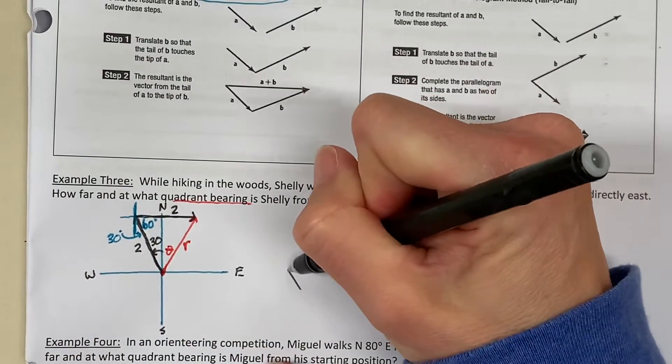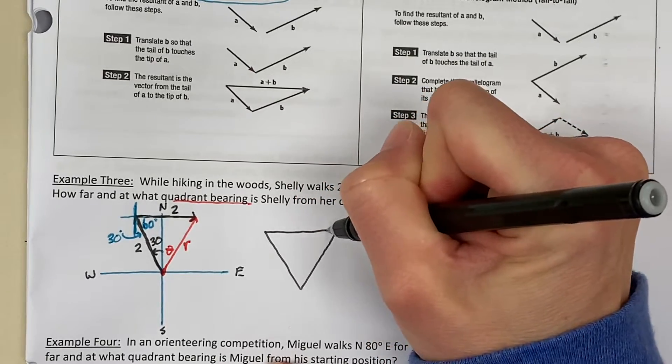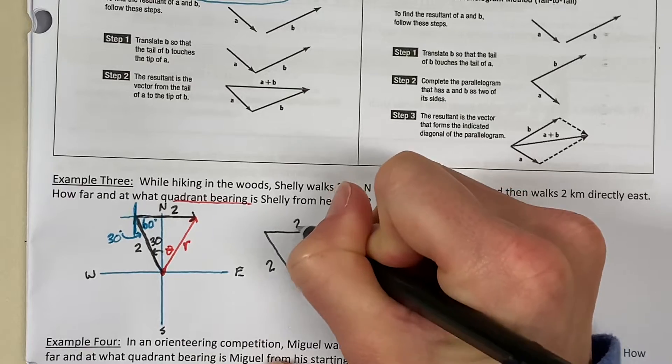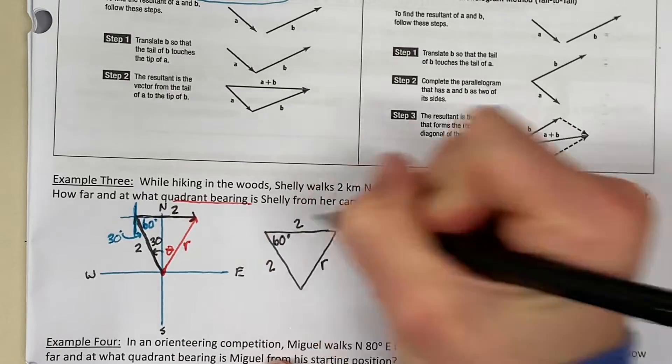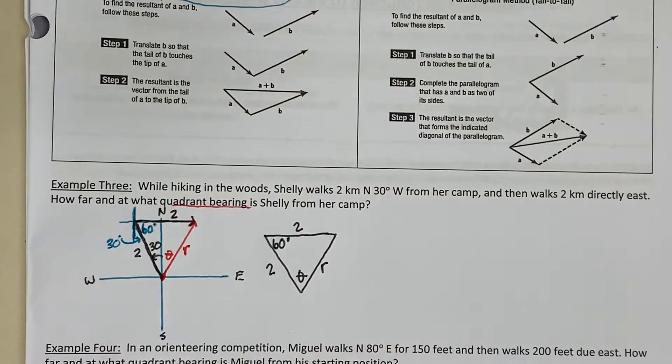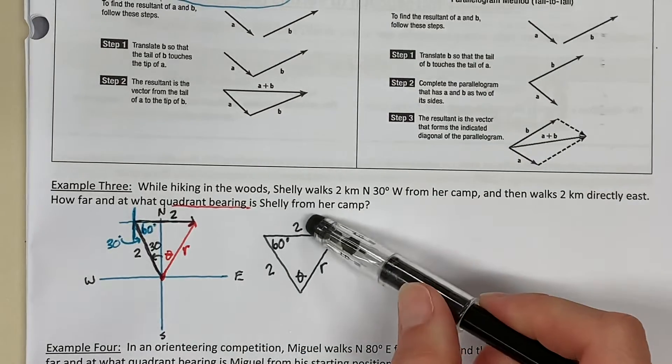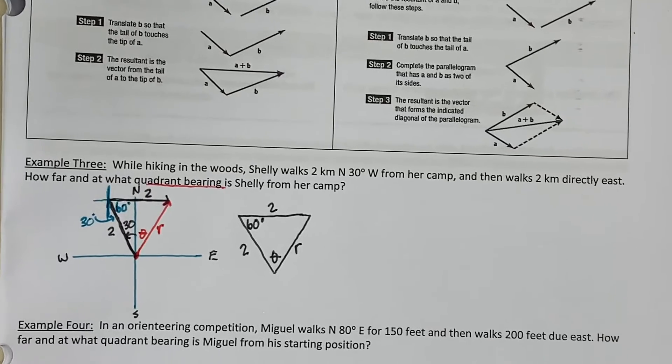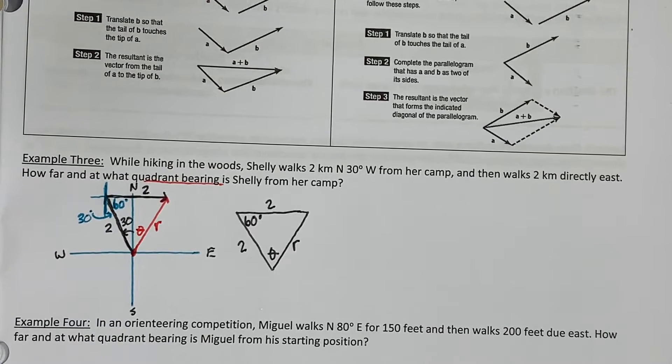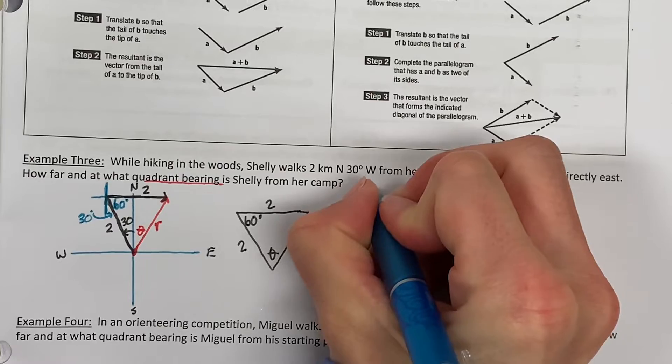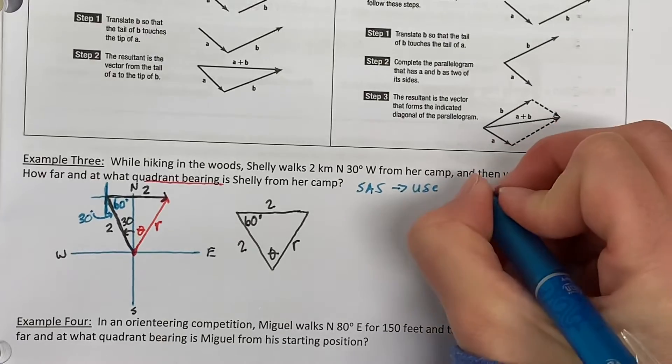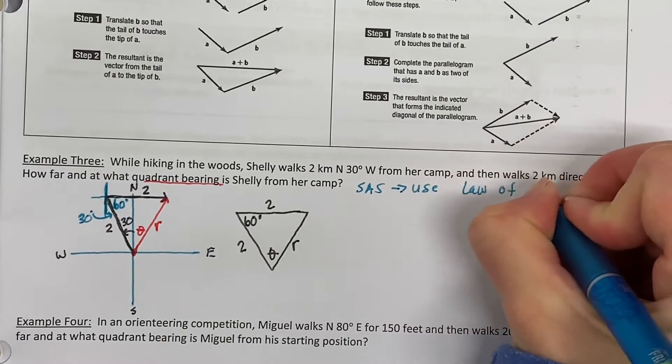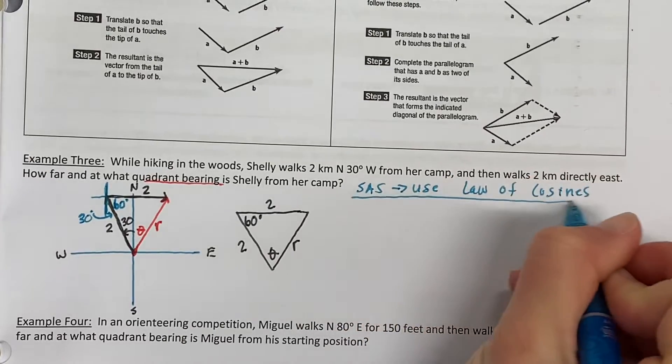So, what I have is a triangle in which this is 2, this is 2. I need to find R. And I know this angle right here is 60 degrees. And I need to find this angle theta. Notice I have side, angle, side of an oblique triangle, a non-right triangle. Therefore, I'm going to use the law of cosines to find out what R is, and theta.